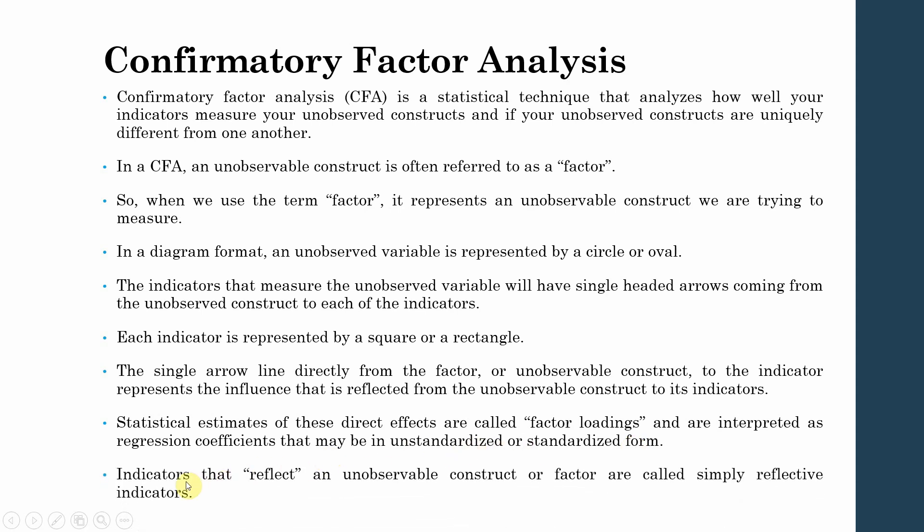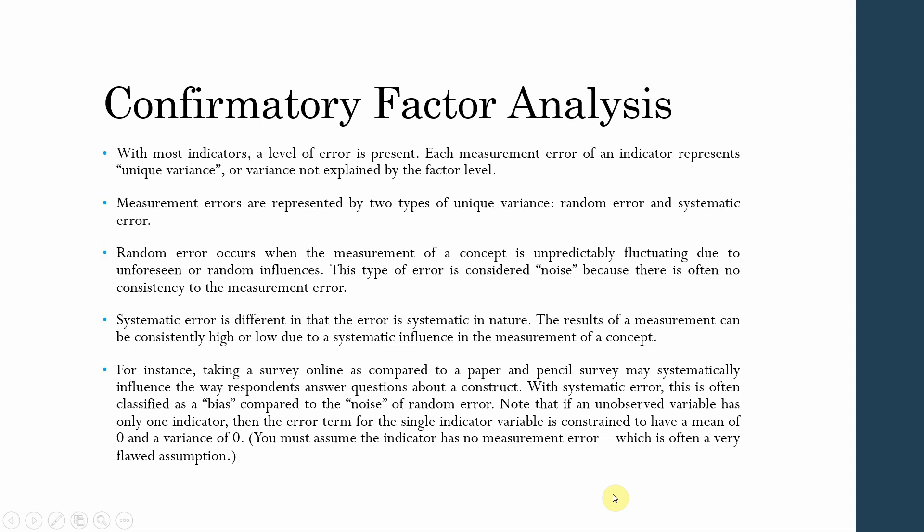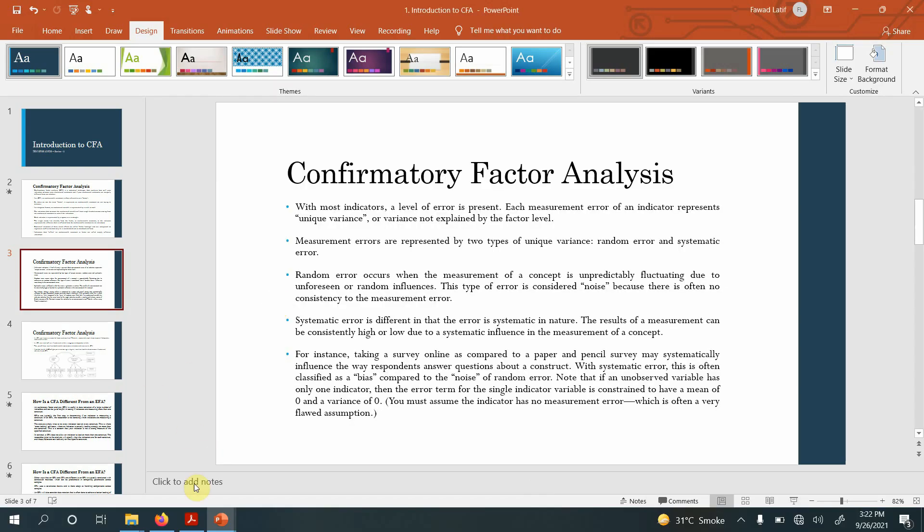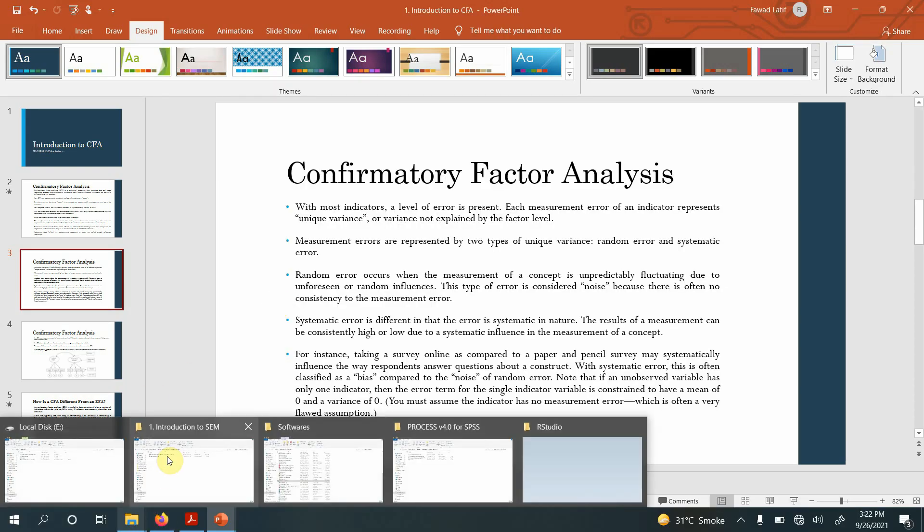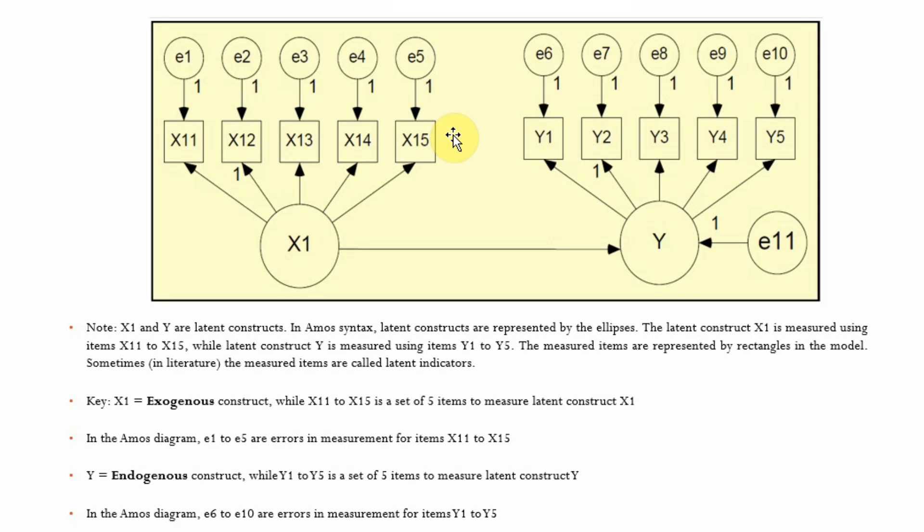Indicators that reflect an unobservable construct or factor are called reflective indicators. Let me show you a brief example: these are your indicators, this is your unobservable construct, and these are your error terms.